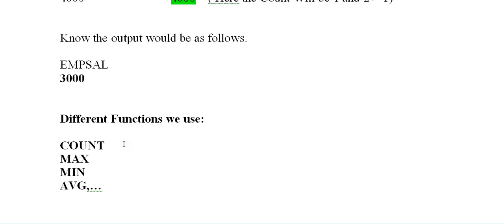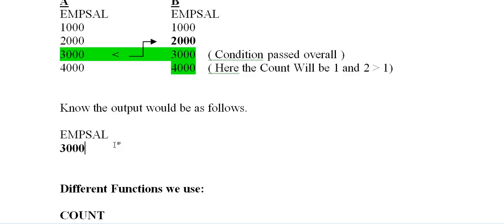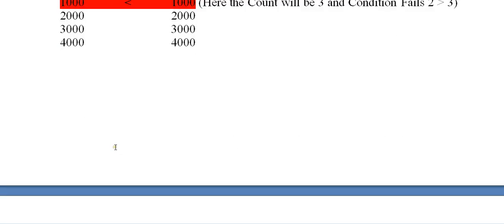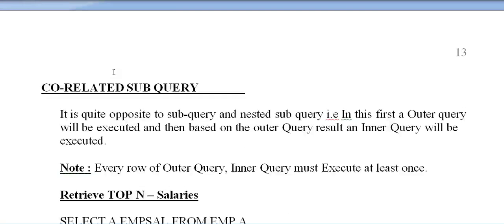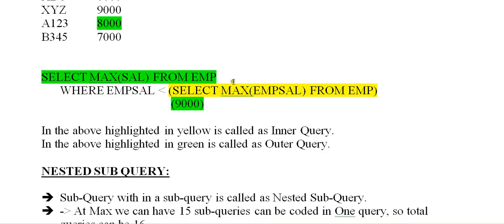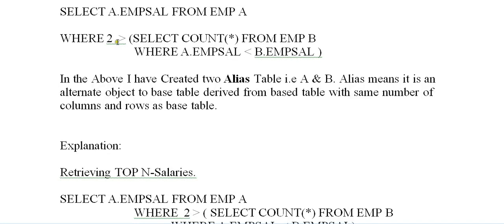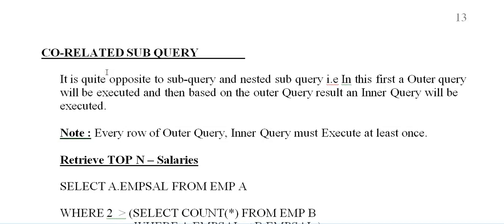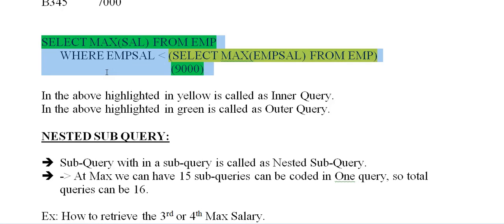To summarize: if you only need the second max salary, a simple nested subquery is easier to write. But when you need to retrieve more than 10 or 15 top salaries, you should use a correlated subquery. The choice depends on your specific situation and requirements.